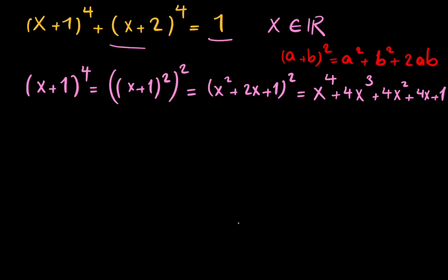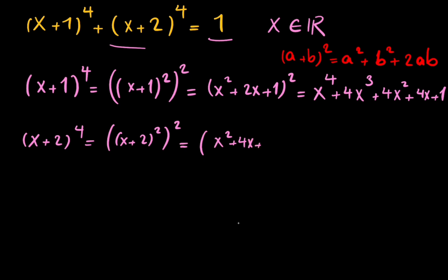I have the same idea for (x+2)⁴. I can write it as (x+2)² squared, so I have (x² + 4x + 4)² squared. If you calculate this you will have x⁴ plus 8x³ plus 24x² plus 32x plus 16.